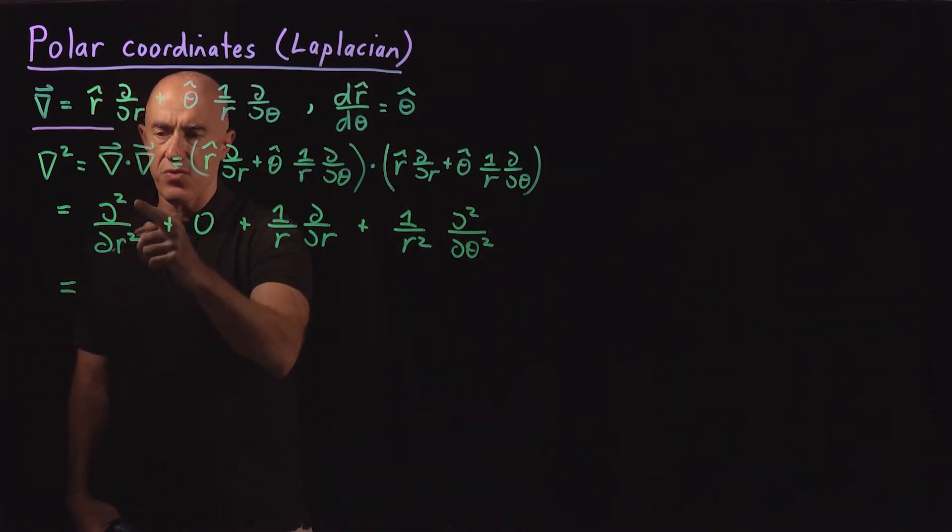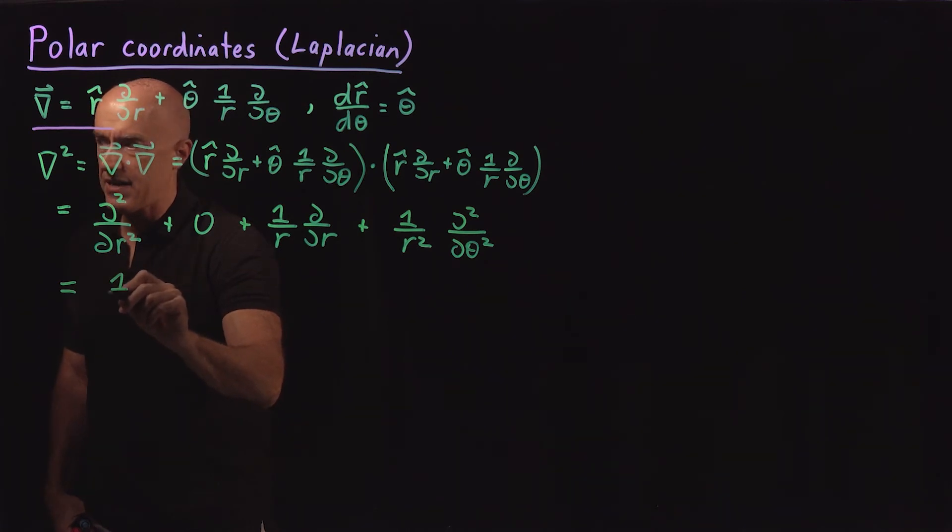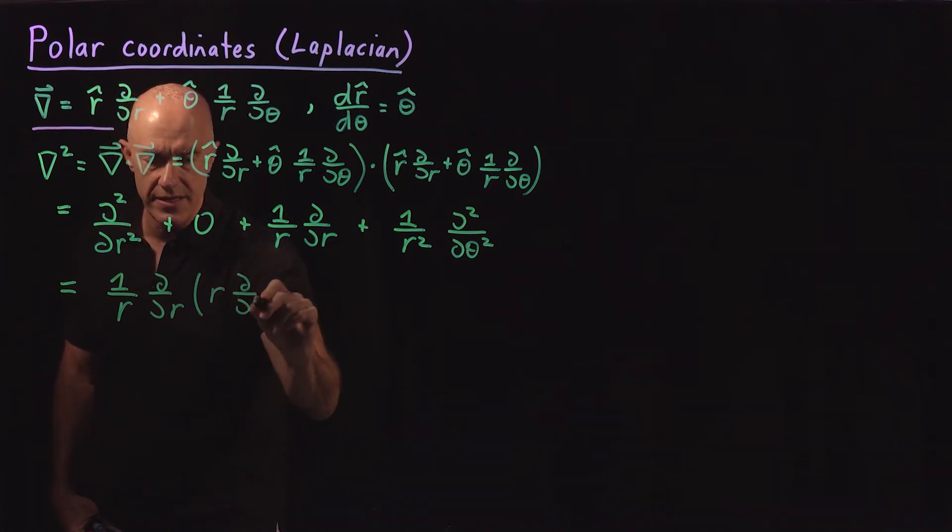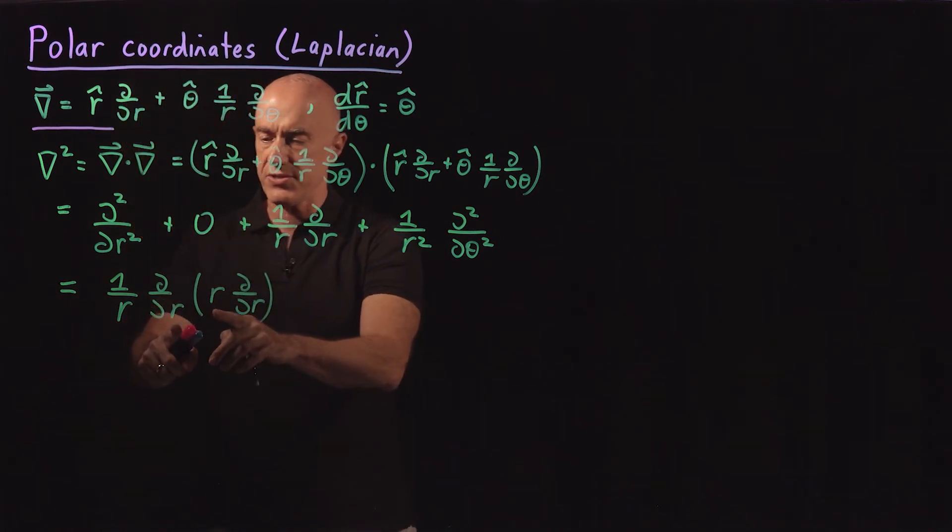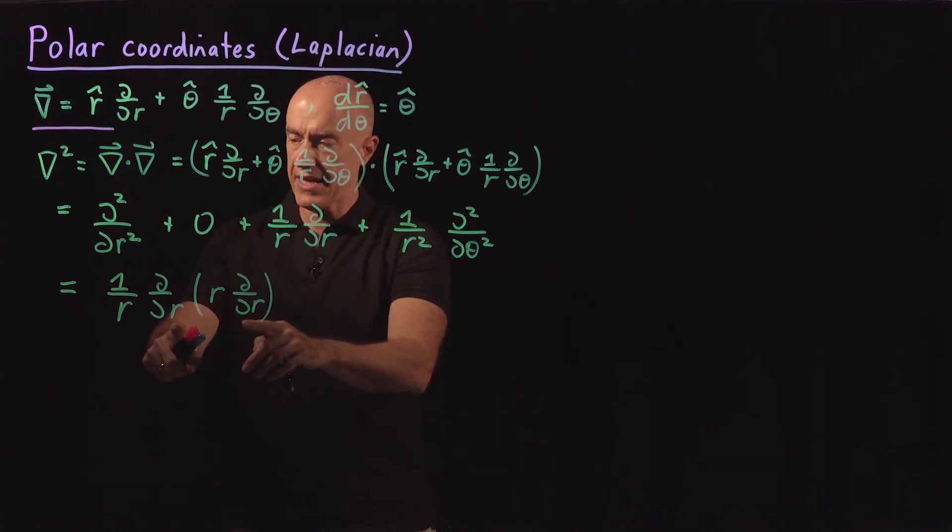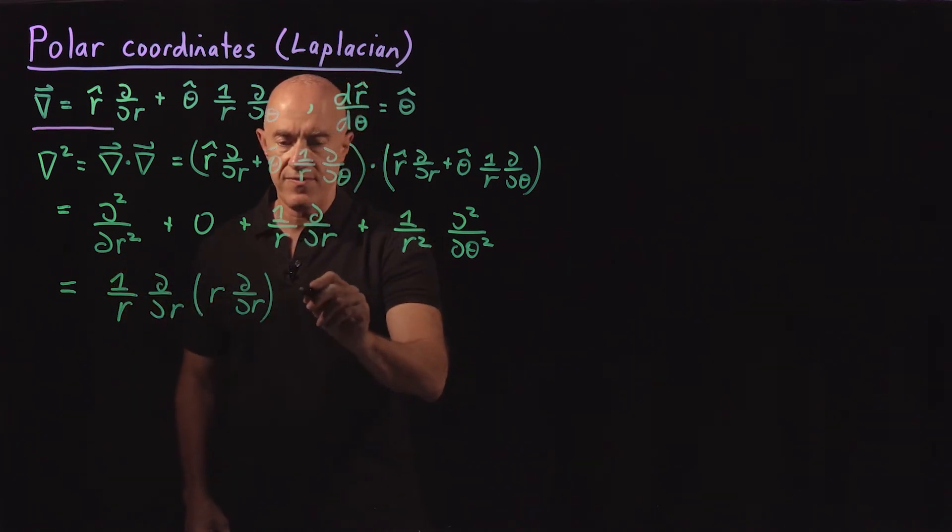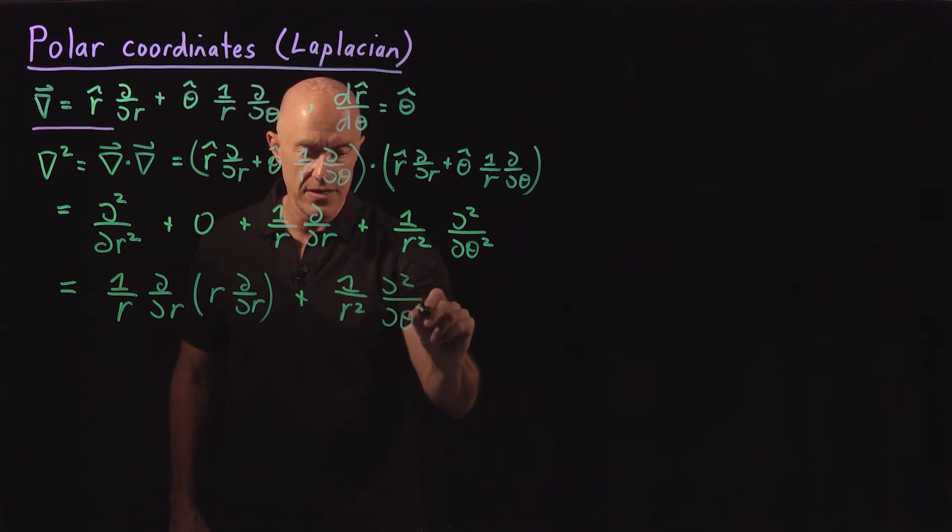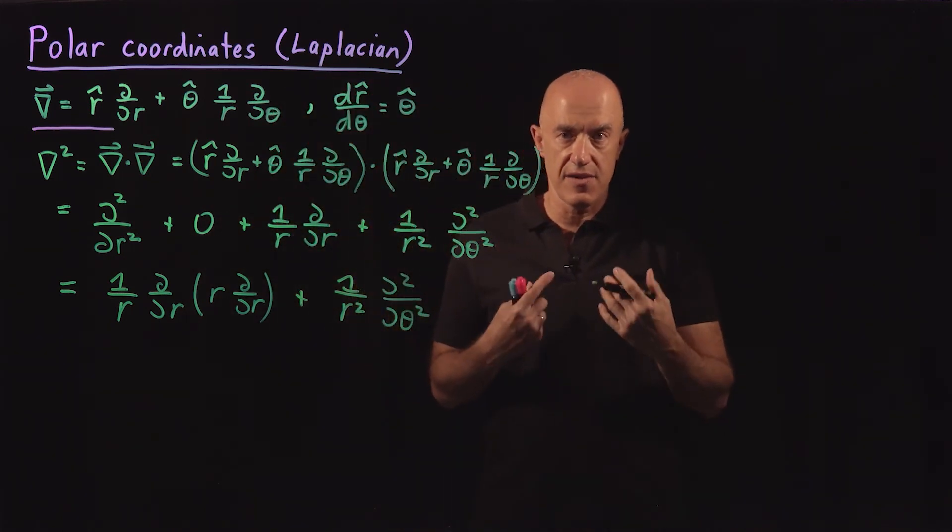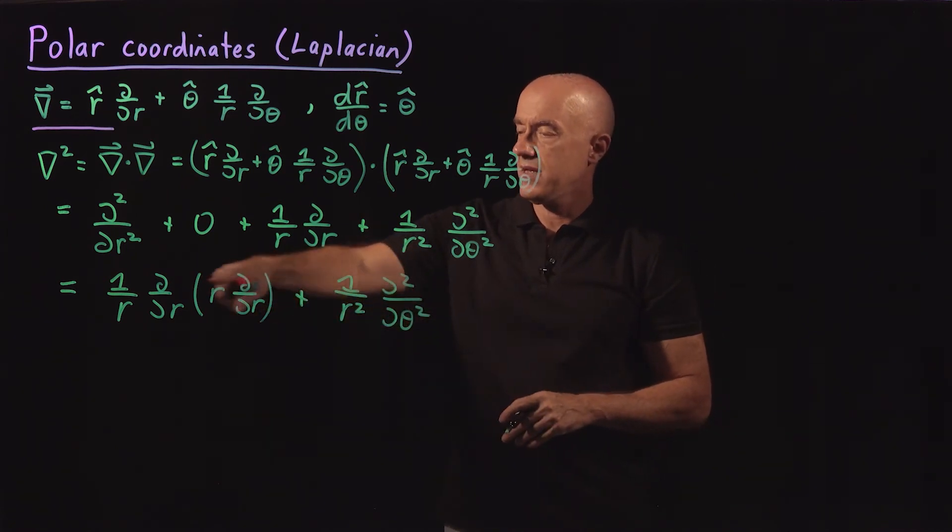This term, d²/dr² plus 1 over r d/dr, reduces to one term if we write it as 1 over r d/dr of r d/dr. The derivative of the first times the second gives us 1 over r d/dr plus the first times the derivative of the second. The r cancels the r and we get the second derivative here. And then the last term here is 1 over r squared d²/dθ². That's the differential operator that's called the Laplacian.